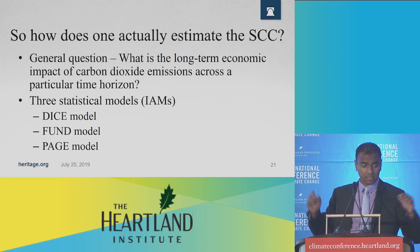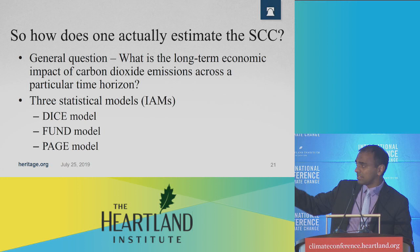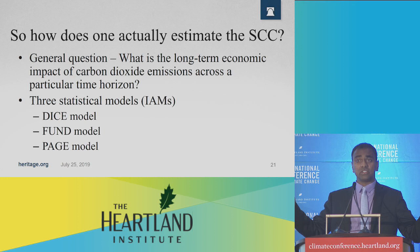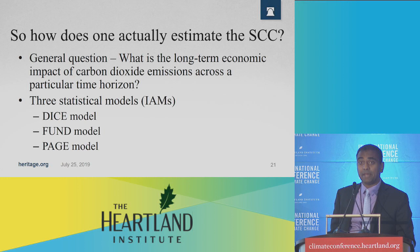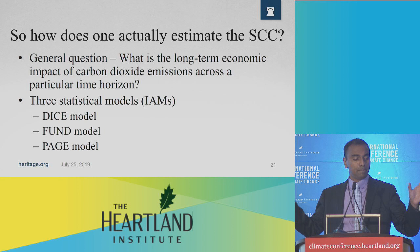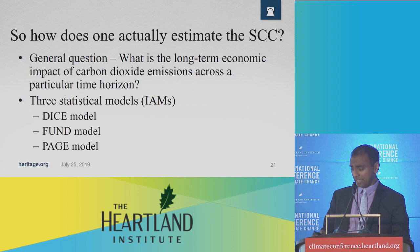Before we go into the details about the SCC, I want to address a general question. With a construct such as carbon dioxide emissions, there are both costs and benefits. Two of these three models — the DICE model and the PAGE model — a priori only assume costs. They are completely disingenuous because they do not incorporate benefits at all. The FUN model begins to incorporate benefits, but the assumptions are a bit outdated.